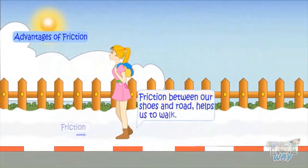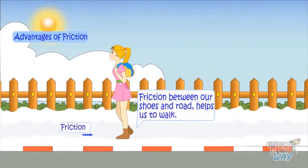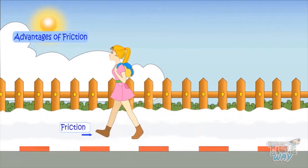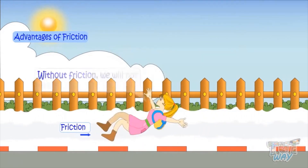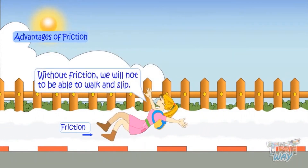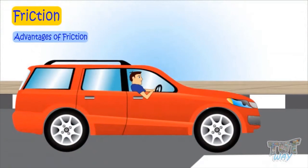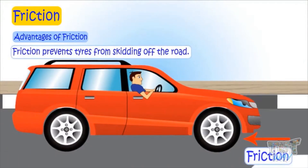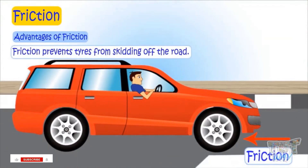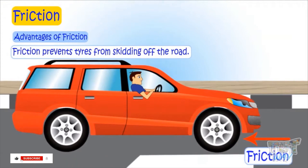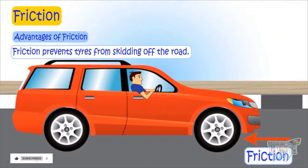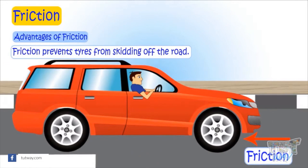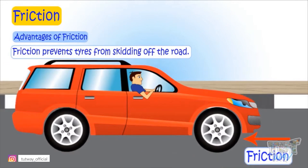Friction between our shoes and the road helps us to walk — without friction we will slip or fall. Friction also helps to prevent the tires from slipping on the road, because wheels need friction to have grip and move forward. This is why tires have grooves to produce sufficient friction.